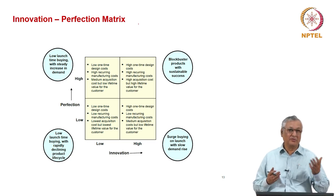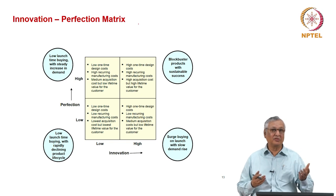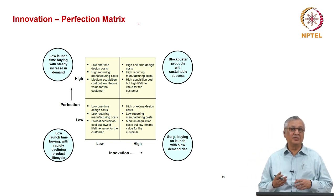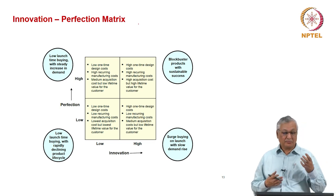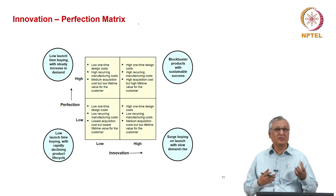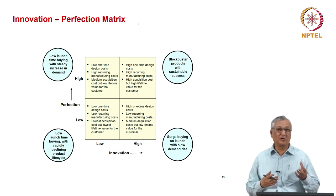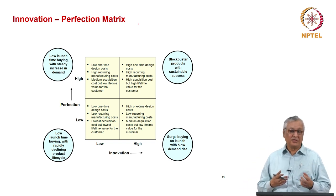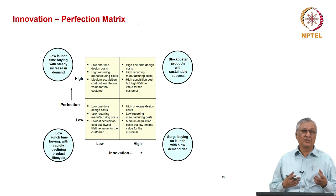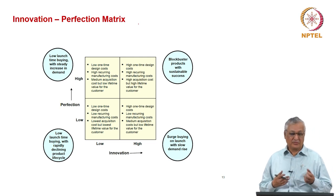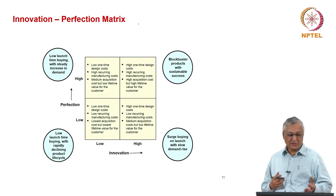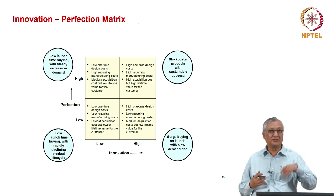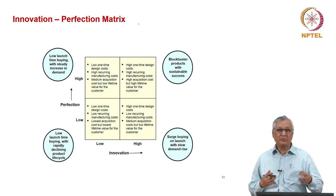That is, reverting to a pen — a pen which has always been in existence but has been made to a much higher order of perfection — therefore, there is persistent buying as people start recognizing that this product, although known, is providing greater lifetime value of possession for the customer. Therefore, you have low one-time design costs, high recurring manufacturing costs because you are pursuing perfection, medium acquisition cost, but again low lifetime value.